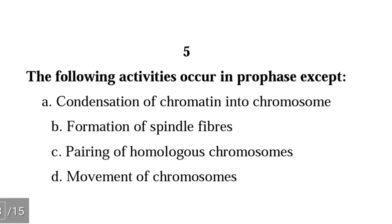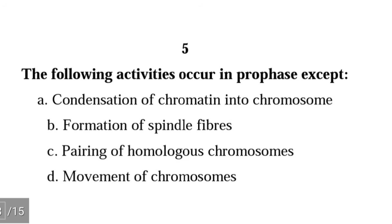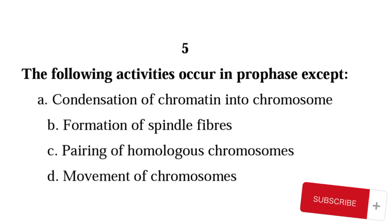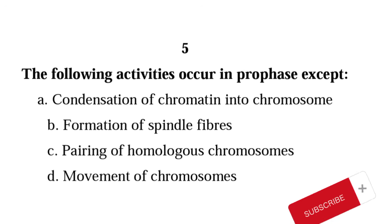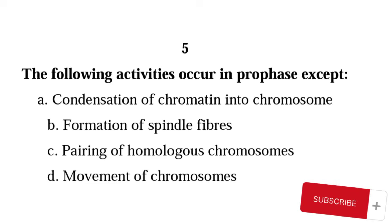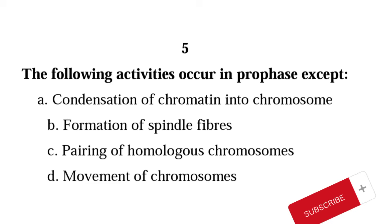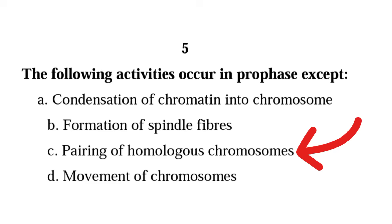Question 5: The following activities occur in prophase except A) condensation of chromatin into chromosomes, B) formation of spindle fibers, C) pairing of homologous chromosomes, D) movement of chromosomes. The correct answer is C) pairing of homologous chromosomes. Homologous chromosomes do not pair up during mitosis — they do that in meiosis.